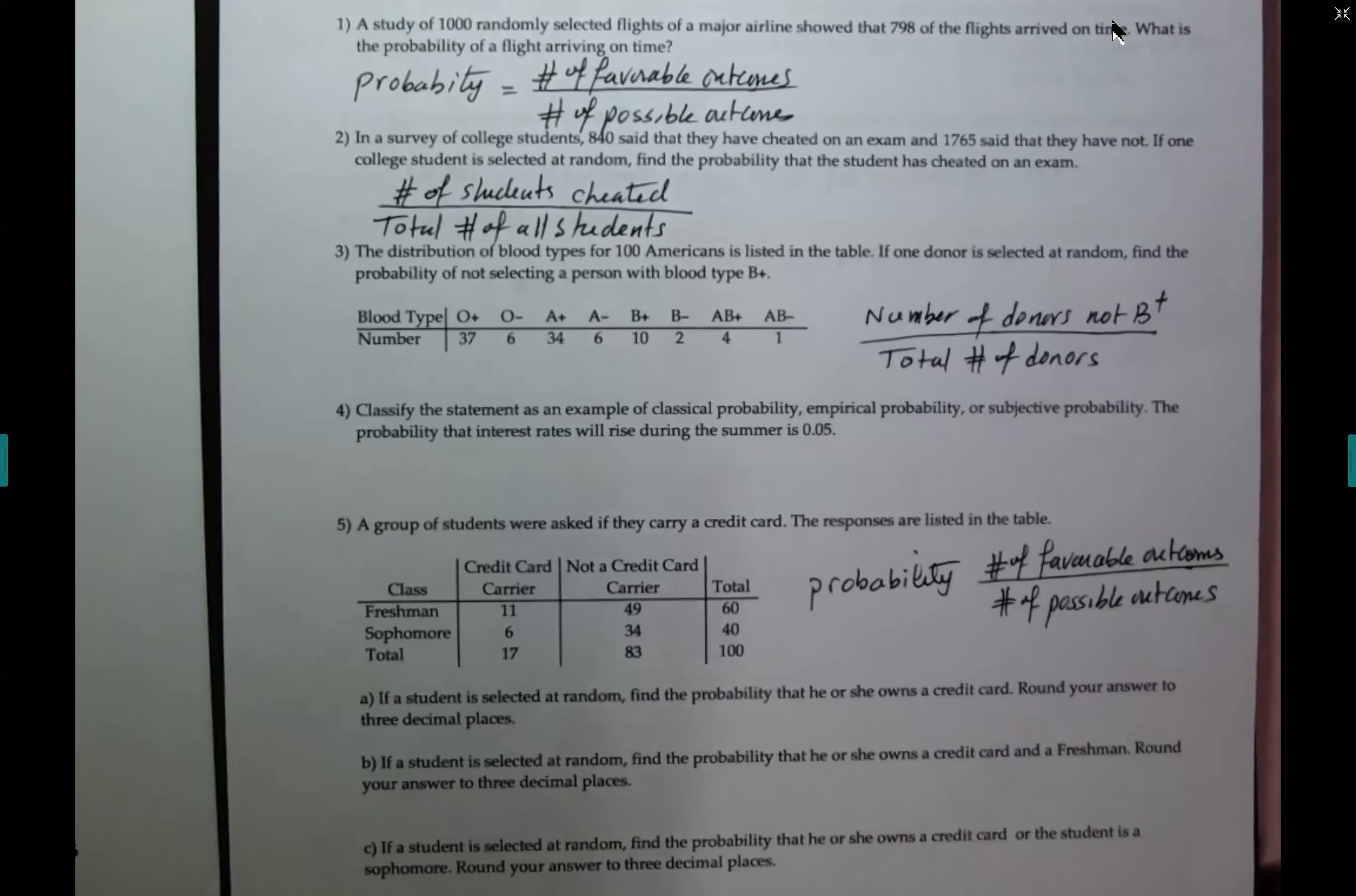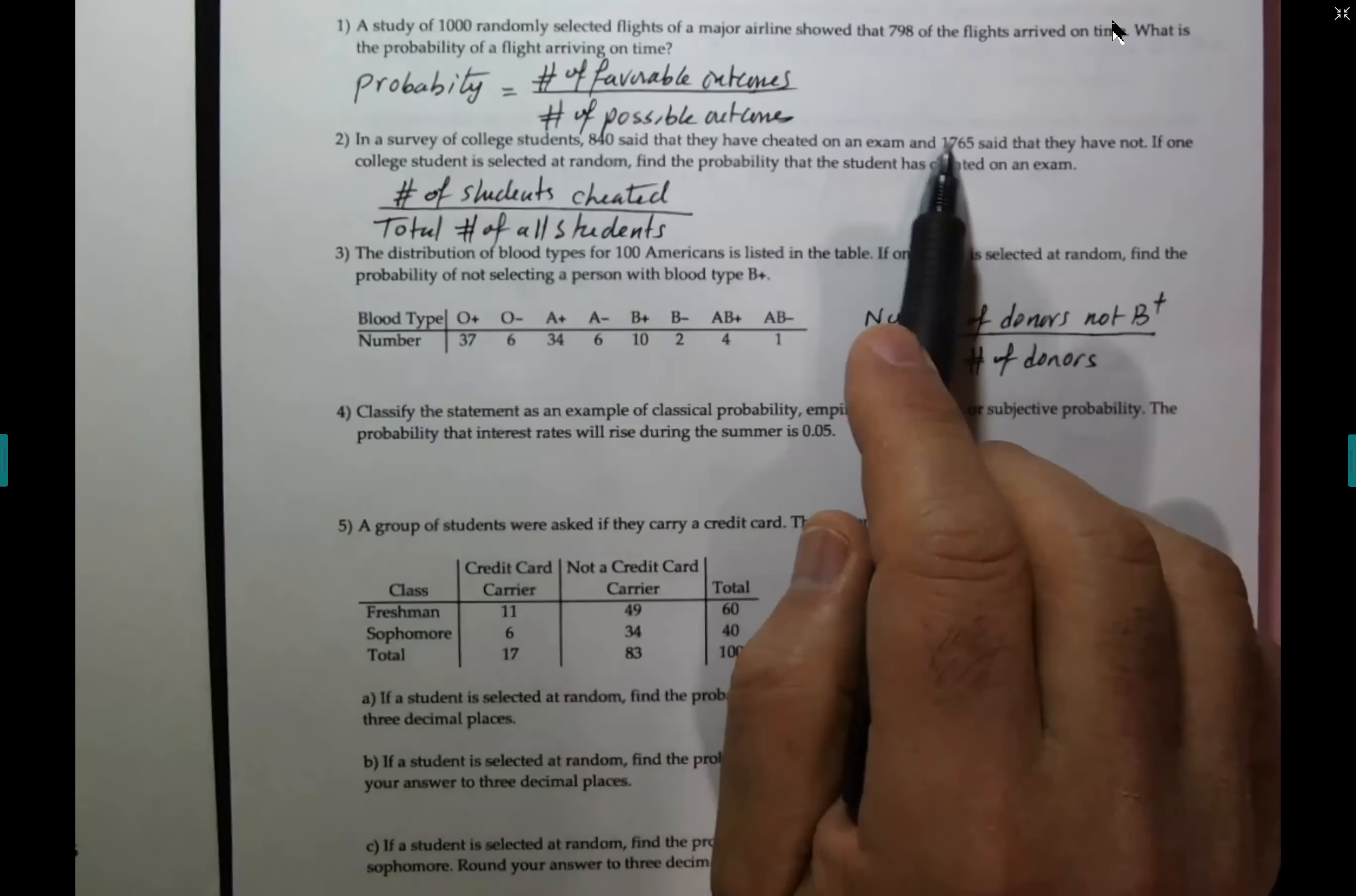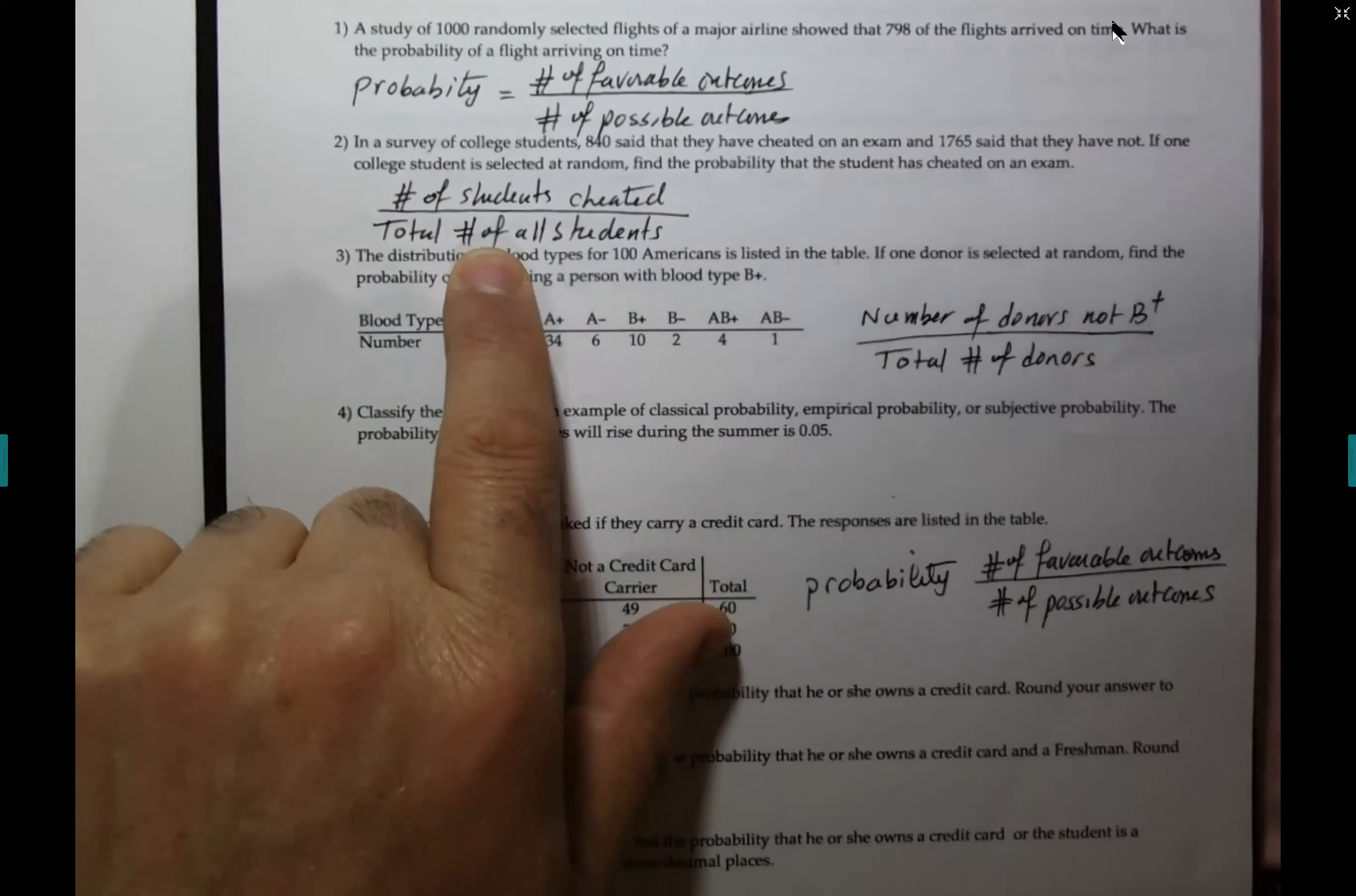Number two, in a survey of college students, 840 said that they have cheated on an exam, and 1765 said that they have not. If one college student is selected at random, what's the probability that the student cheated on the exam? Okay. Favorable outcomes divided by possible outcomes. Number of students cheated. He gave it, he gave it to you already. That's a favorable. What would you put in the denominator? 1765 plus 840. Exactly. There you go. You need all the students, because the denominator is everybody, so you have to add those two and put them in the denominator.